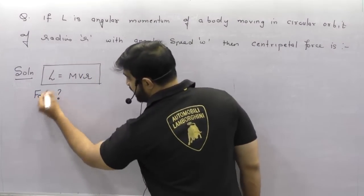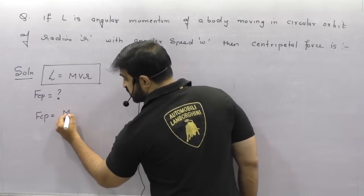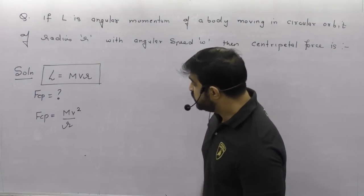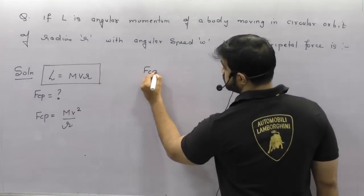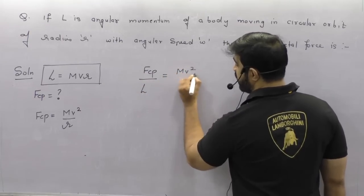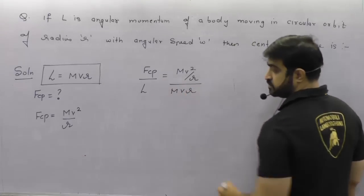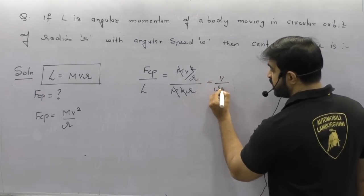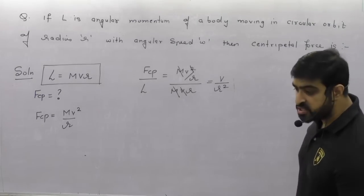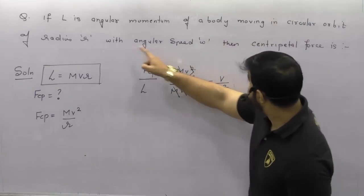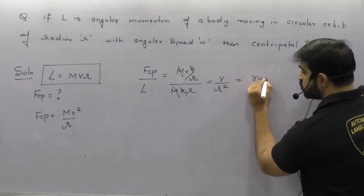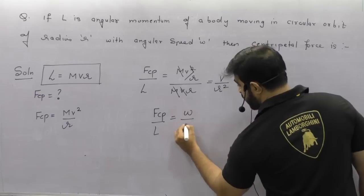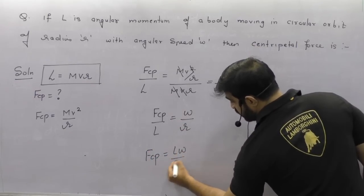Centripetal force is MV²/R. Whenever this kind of question comes, write the formulas and divide both of them. Centripetal force / angular momentum = (MV²/R) / (MVR) — M and M cancel, V cancels, giving V/R². But the question is in terms of omega, and V = R·omega, so substituting: F_cp/L = R·omega/R² = omega/R. Therefore F_cp = L·omega/R.